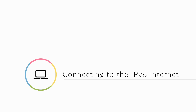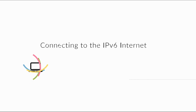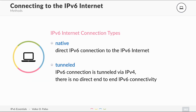To connect to the IPv6 Internet, there are different options. The two major types are native connections, which means you have direct IPv6 connectivity to the IPv6 Internet — you have an ISP router with IPv6 inside and outside and your own prefix — and tunneled connections, where IPv6 is tunneled over IPv4 and IPv6 routing is reliant on IPv4 routing.